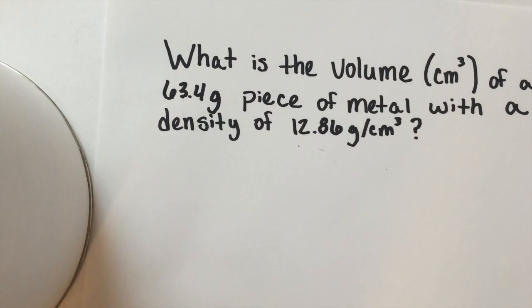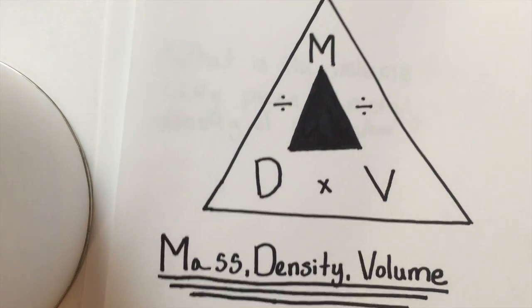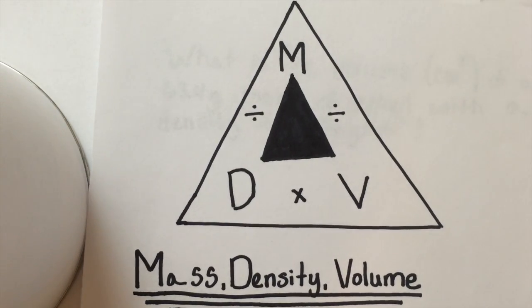What is the volume of a 63.4 gram piece of metal with a density of 12.86 grams per centimeters cubed? You can use this triangle to solve any question like this.